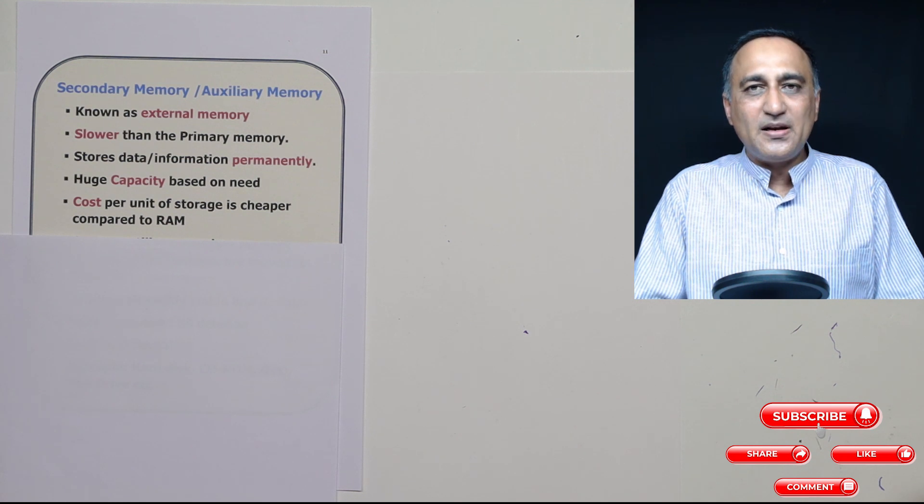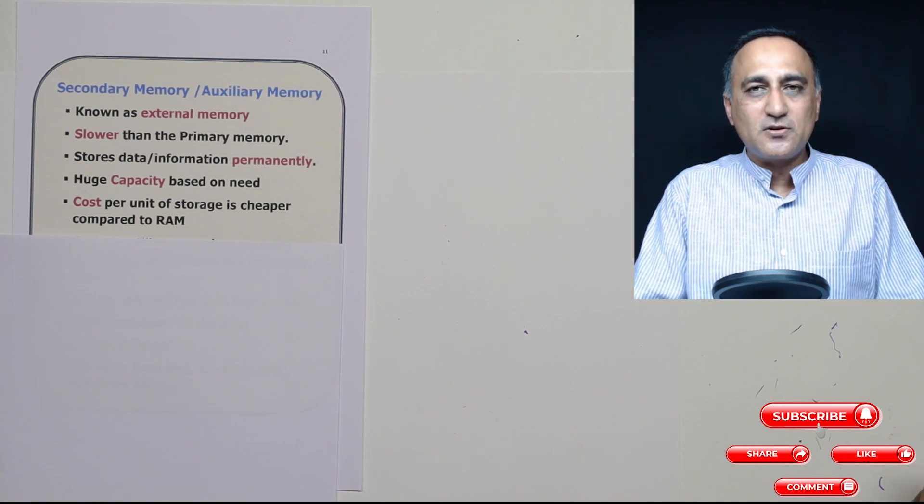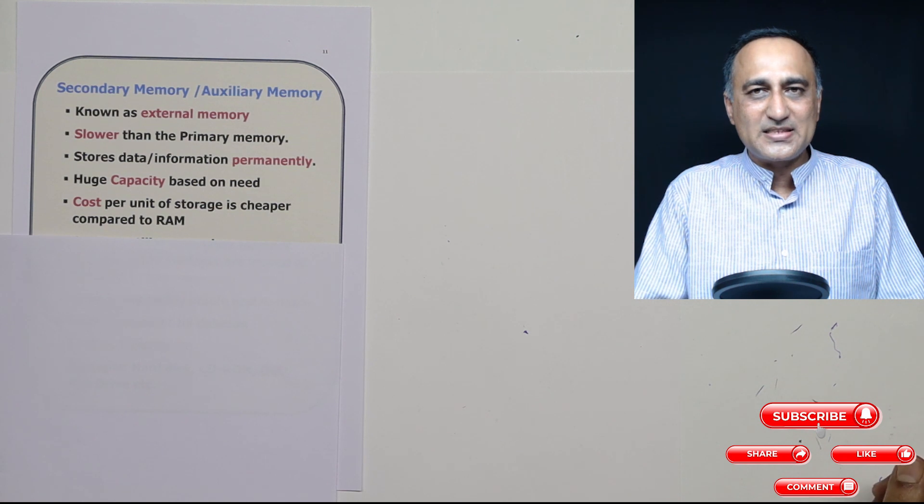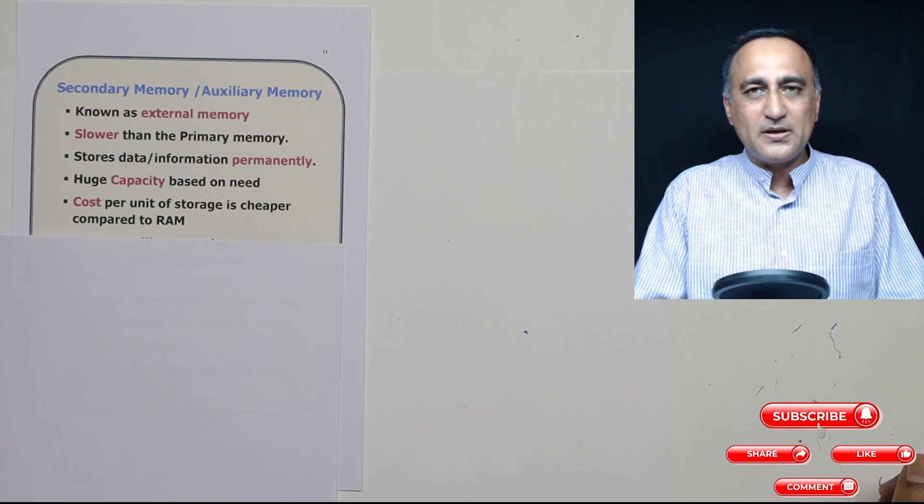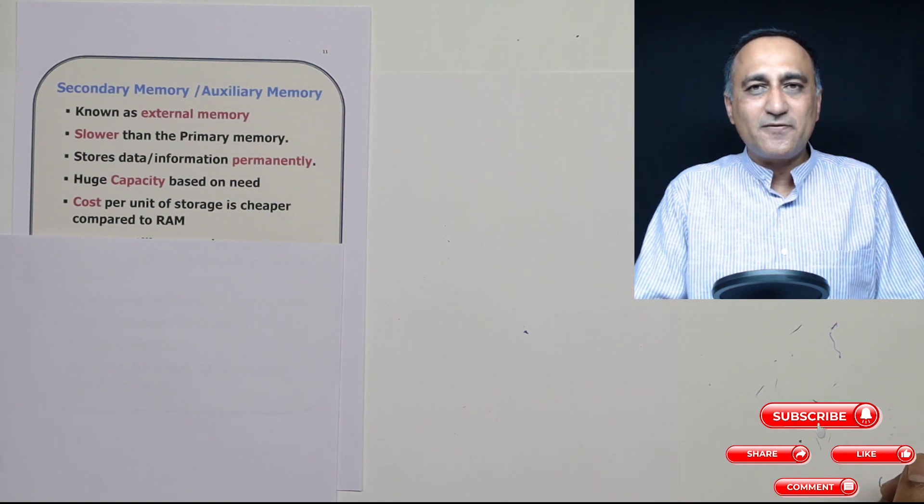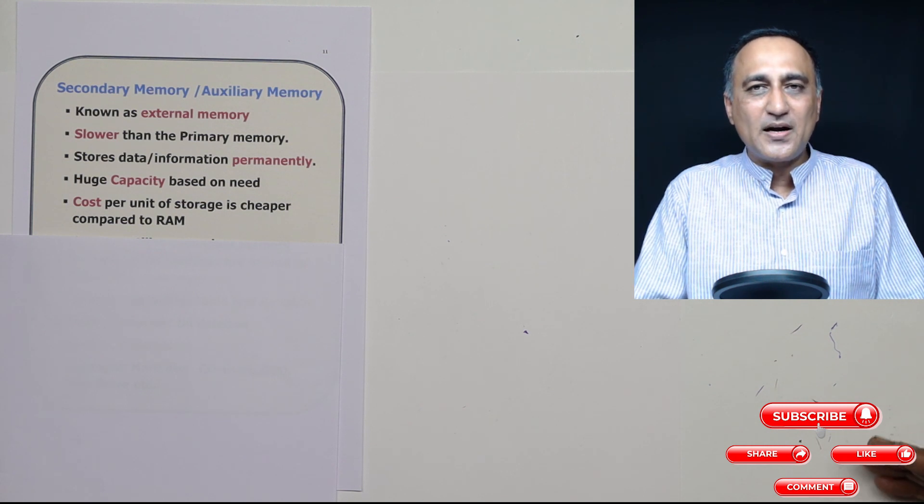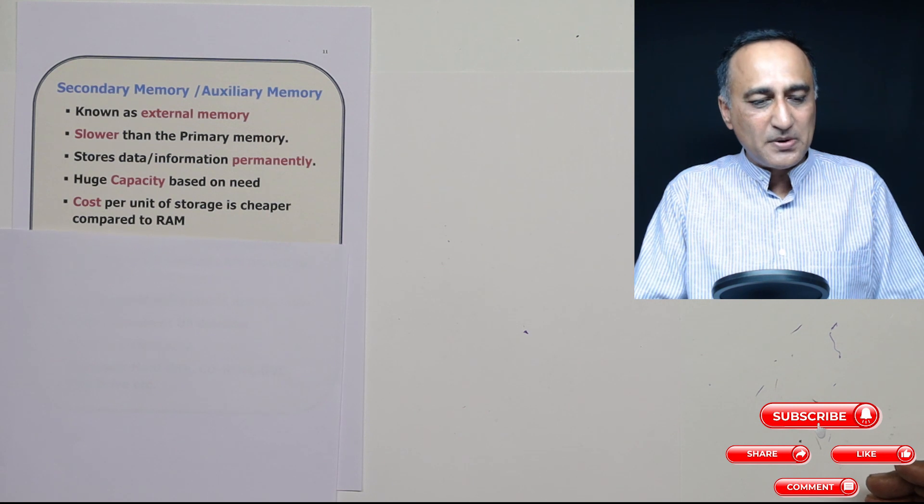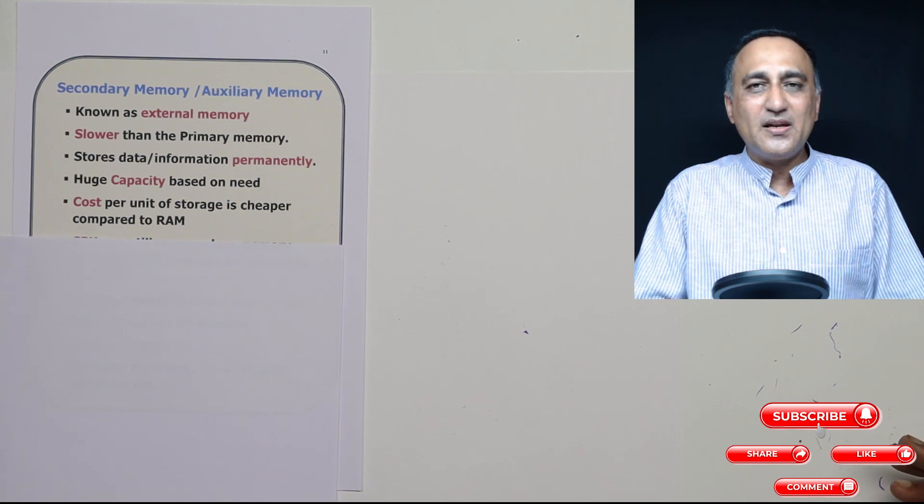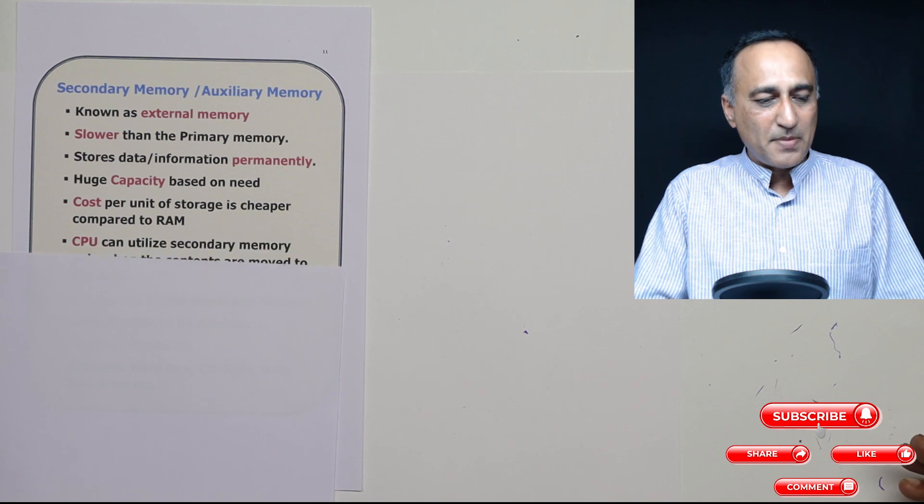For example, the other day I inquired what the cost of 8 GB of RAM would be for my Asus TUF gaming laptop. They said it will be around 3500 to 4000—around that price you will get a good hard disk of around 1 TB. So that is the price difference between a hard disk and main memory.